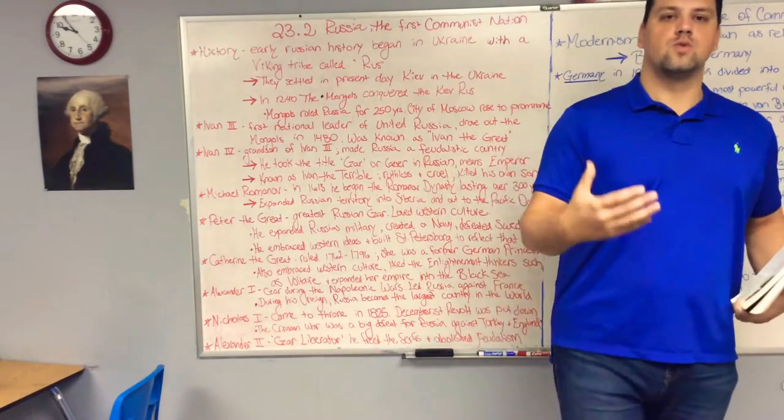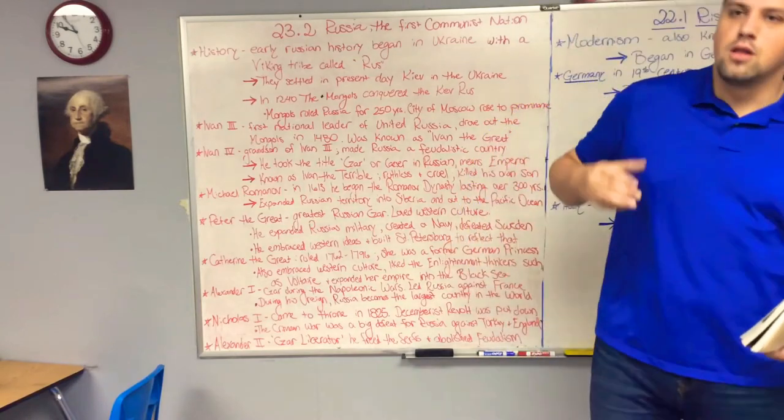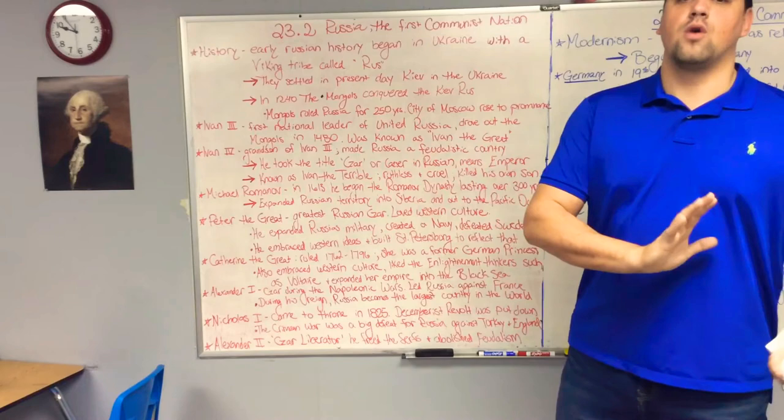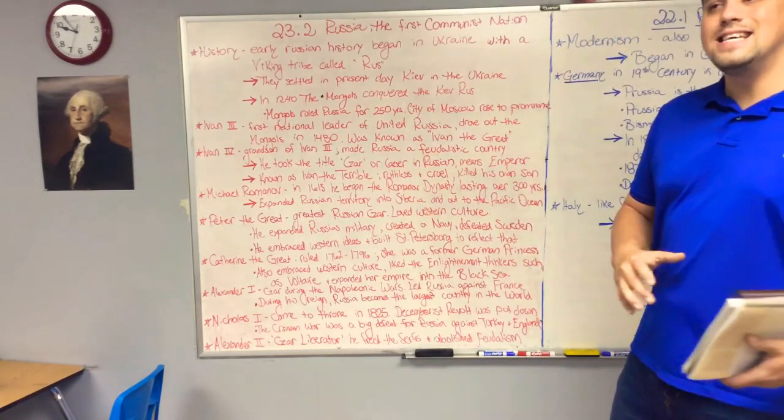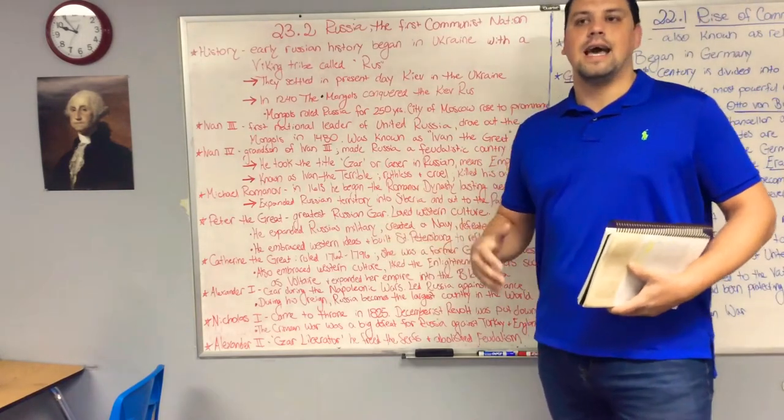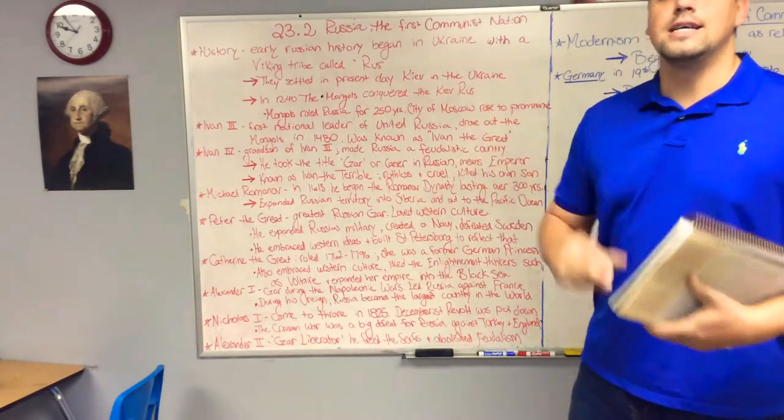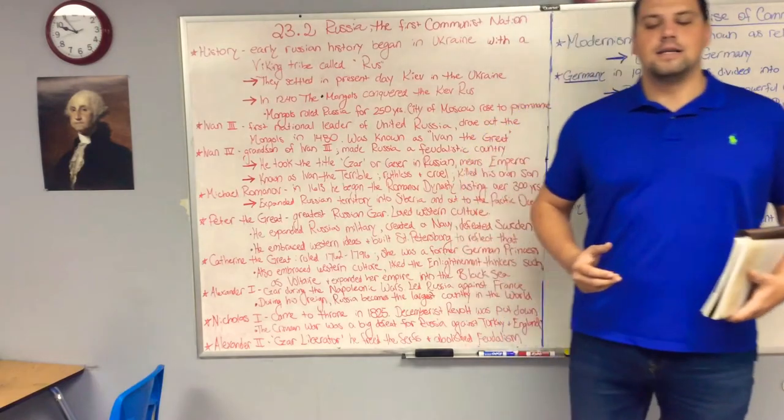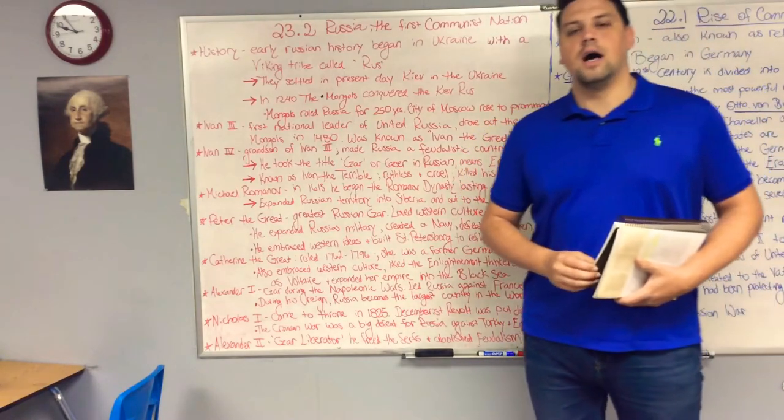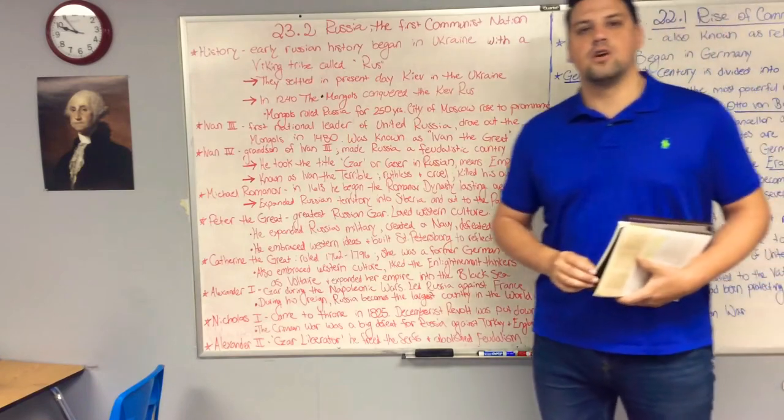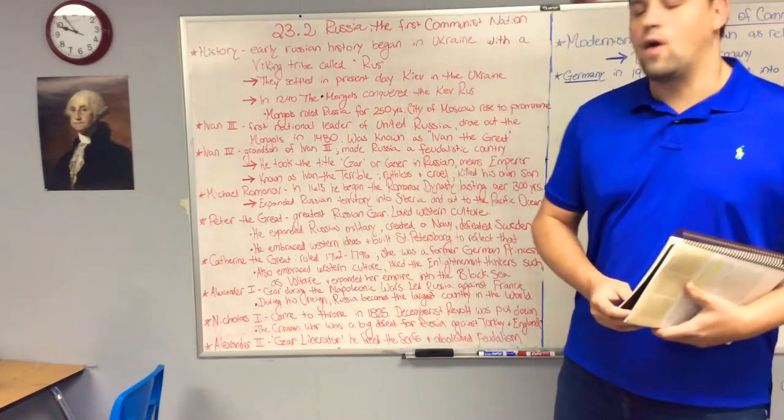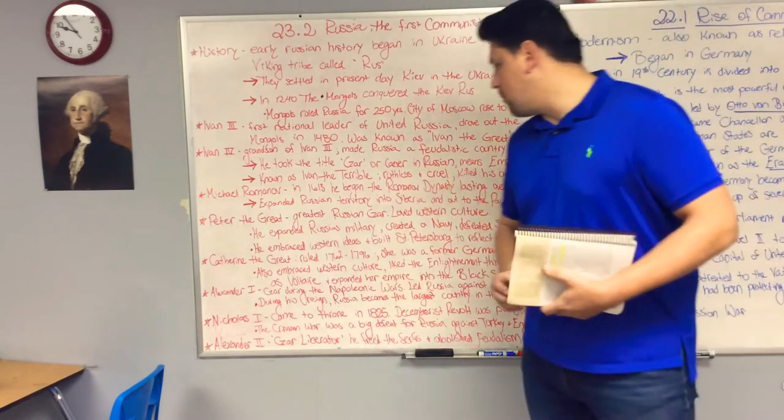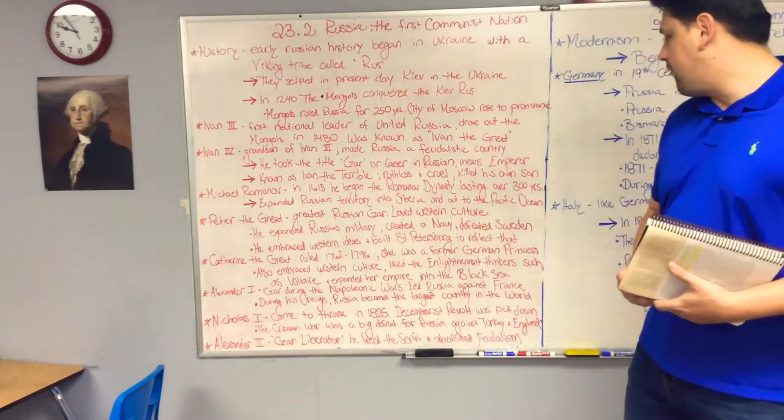She will later see the French Revolution as a threat to her power and push away from it a little bit more. But she is forward-thinking and wants to push Russia into the modern age. She expands Russia's borders, winning several territories along Poland's border and the southern border with Turkey near the Black Sea and the Crimea. She expands the size of her empire and is remembered as Catherine the Great for this.